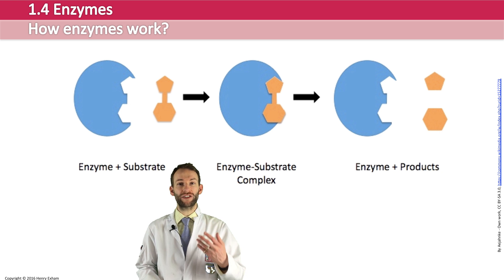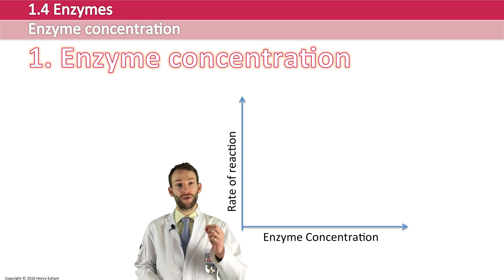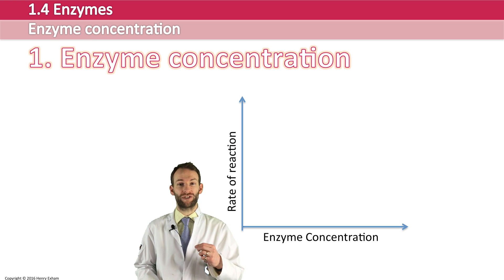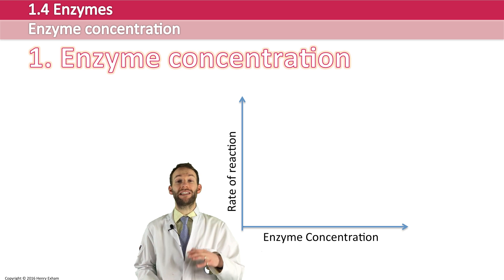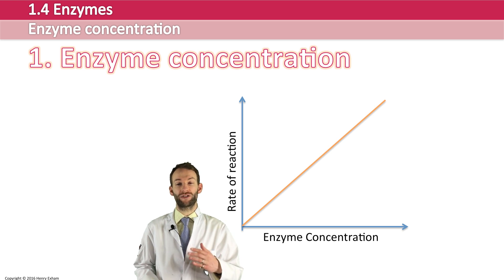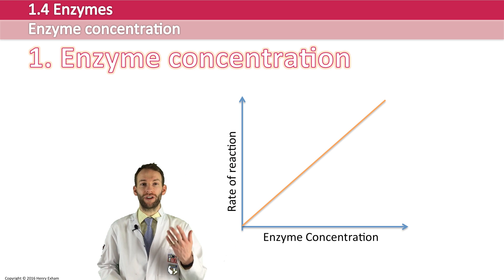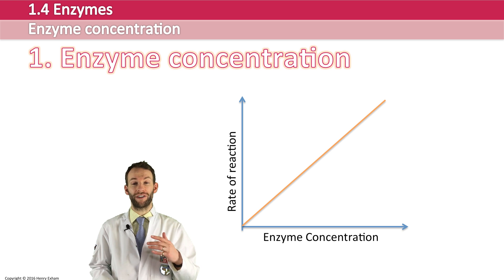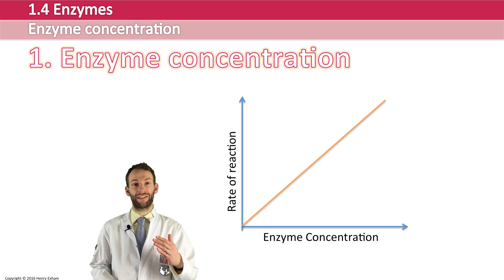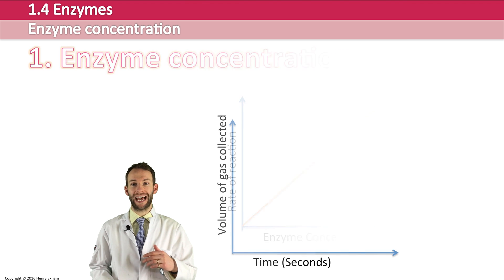Let's start with enzyme concentration. Enzymes are actually really efficient — you only need a very small amount of them for a reaction to work. However, if you do add more, then the rate of reaction will increase, as shown by this straight line graph here. This isn't typical though, because normally the substrate will start to run out, become a limiting factor, and the graph will start to tail off.